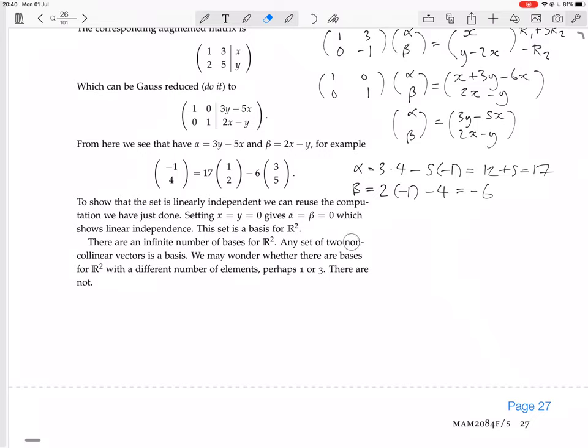Okay, so non-collinear, well, collinear means in the same line, I guess. So if you're collinear, two vectors are collinear, then they are multiples. One is the multiple of the other, right? So they point in the same direction. So any set of two vectors that don't point in the same direction, any set of two vectors that aren't a multiple of each other is a basis.